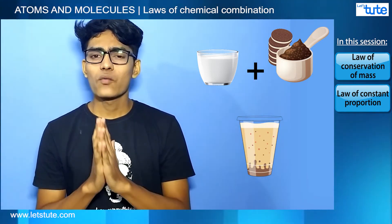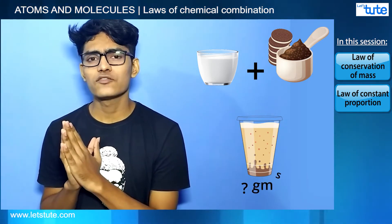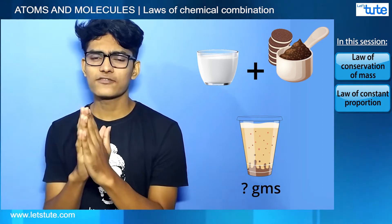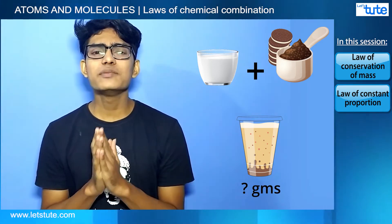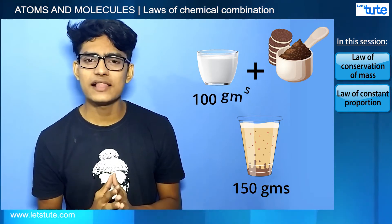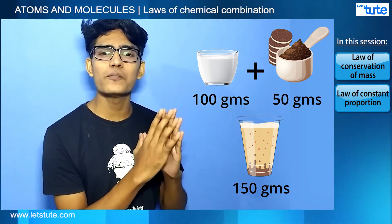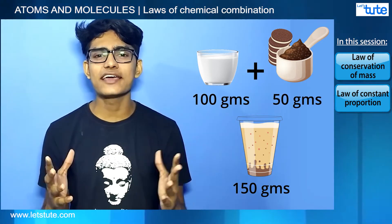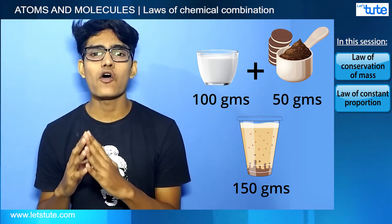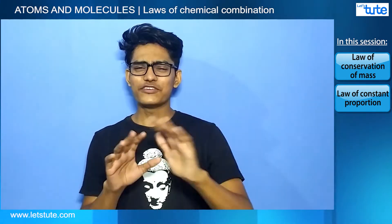But what will be the weight of this one glass of Oreo milkshake? Of course it will be 150 grams — that is 100 grams of milk and 50 grams of Oreo biscuit — which gives 150 grams of Oreo milkshake.